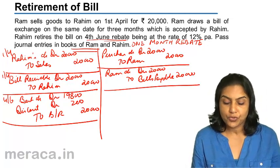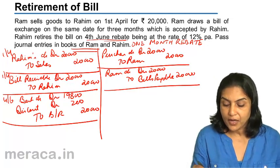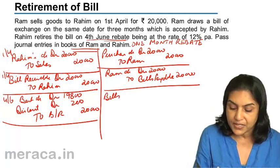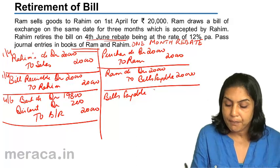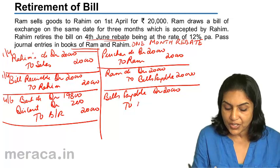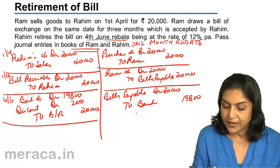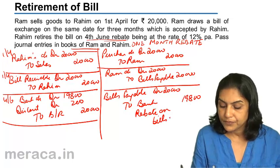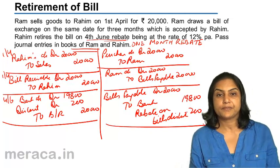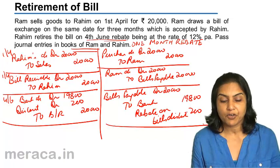On 4th June, Rahim pays only 19,800. The entry: bills payable account debit 20,000; to bank 19,800 (Rahim gives a cheque); to rebate on bills discounted 200. This is how entries are passed in the books of Rahim in the case of the retirement of a bill.